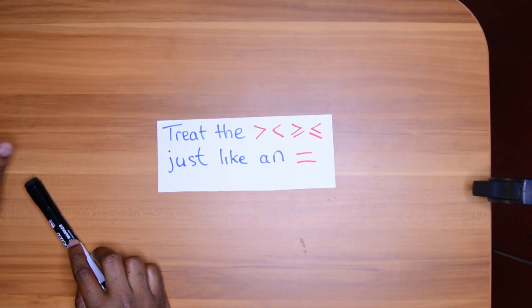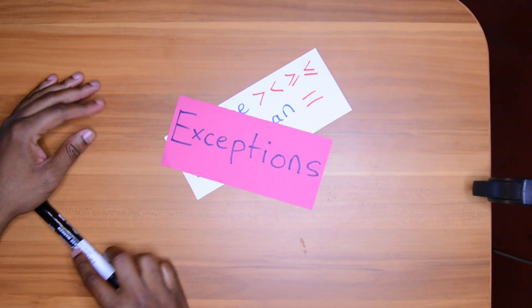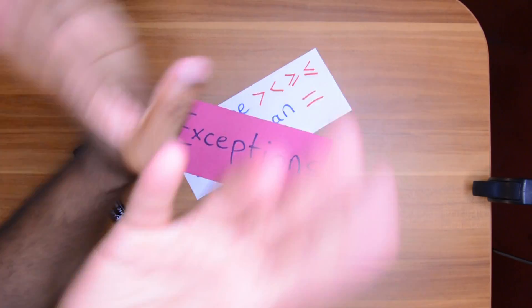Well, there are actually exceptions. There are actually two things you need to worry about that will actually flip around the inequality sign when you are solving the in-equation, not equation, when you are solving the in-equation as you are coming down. There's two things you can do. I know people normally say one, but there's actually two things you can do that will cause the inequality sign to flip around.